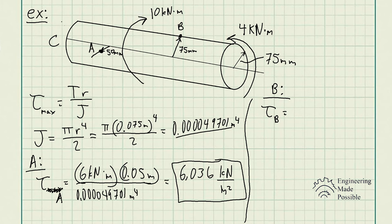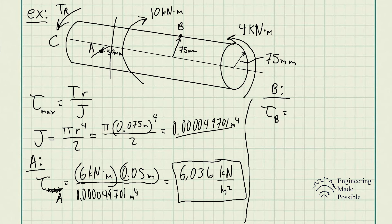To find the torque at point B, you can determine the reactive torque at the fixed end that puts the shaft in static equilibrium — with 10 kN·m clockwise and 4 kN·m counterclockwise — and then analyze the shaft from the fixed end to point B. The summation of torques gives a net torque of 6 kN·m. That's one way of looking at it.